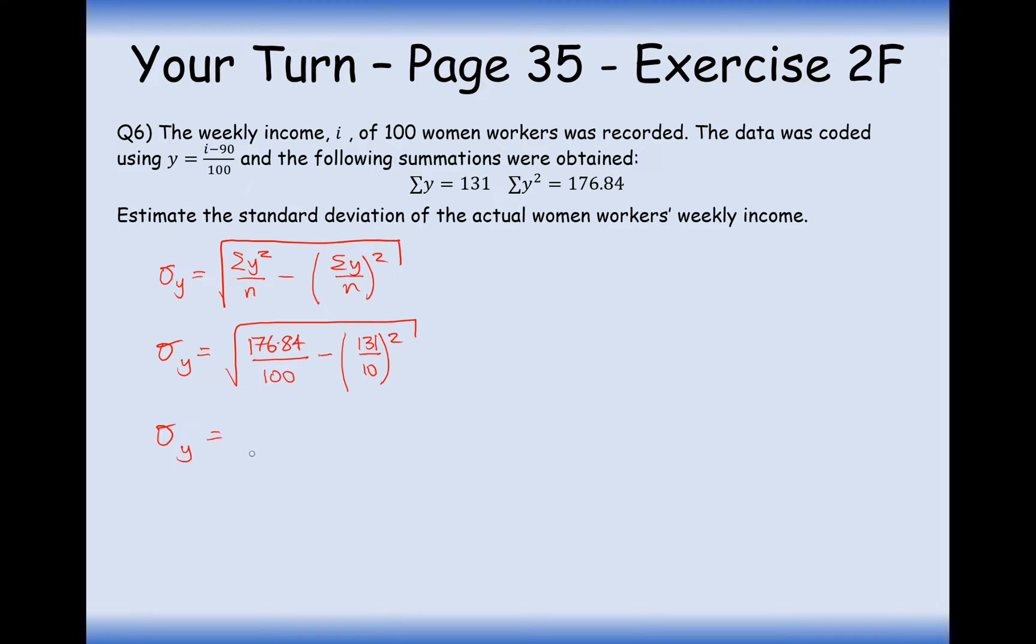So it's 176.84 divided by 100 workers minus the mean squared. That's going to be 131 divided by 10 squared. So, bear with me while I get my calculator out. So it's 100 square root of 176.84 divided by 100. Whoops, I didn't do the 100 right in there. So, and then it's going to be subtract and in brackets 1.31 squared and then square root of our answer. And we're going to get the standard deviation of 0.022869.